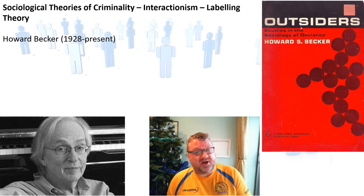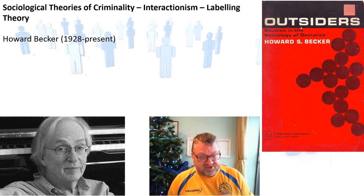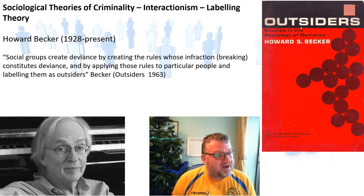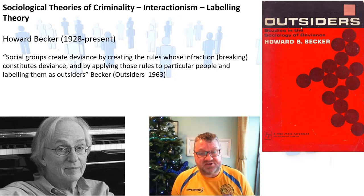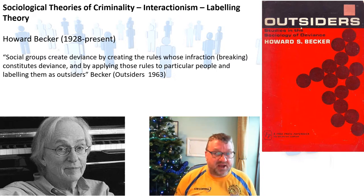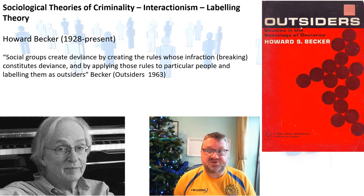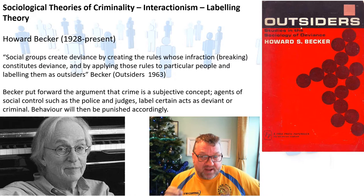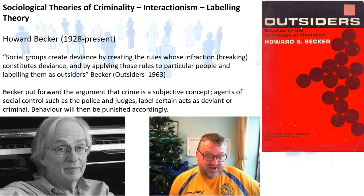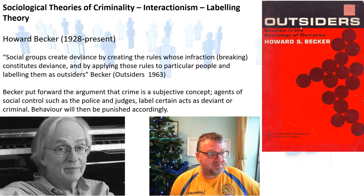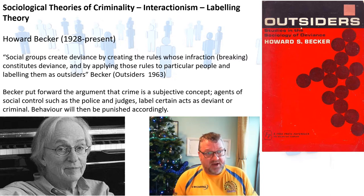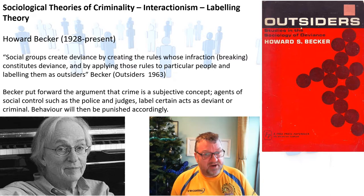This starts with Howard Becker. In his important book The Outsiders, he said that social groups create deviance by creating the rules whose breaking constitutes deviance, and by applying those rules to particular people and labelling them as outsiders. Becker puts forward the argument that crime is subjective. Agents of social control, such as the police and judges, label certain acts as deviant or criminal, and the behaviour is punished accordingly. So crime is a social construct.